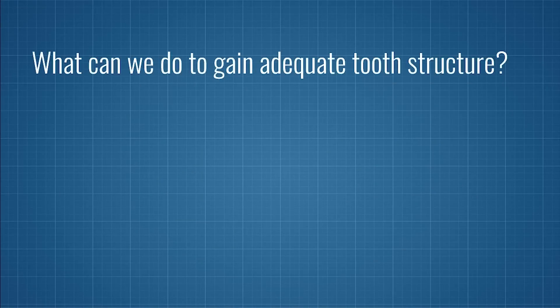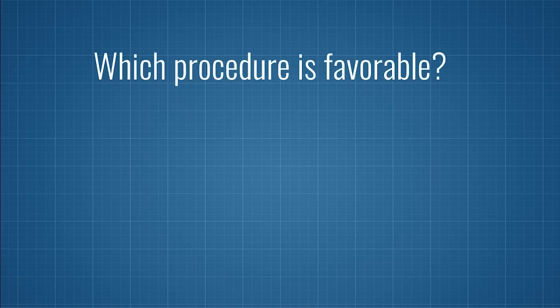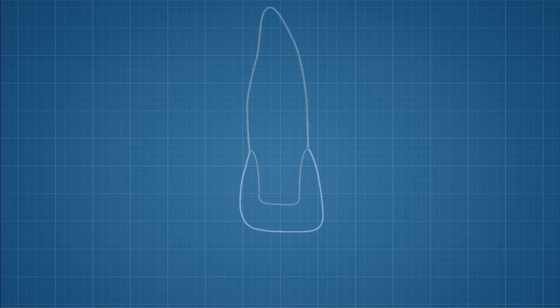Let's quickly run through how we can gain adequate tooth structure if your tooth doesn't have enough natural tooth height for a ferrule. The two options are crown lengthening and orthodontic extrusion. The question is: which procedure is going to be more favorable when it comes to the crown-to-root ratio?